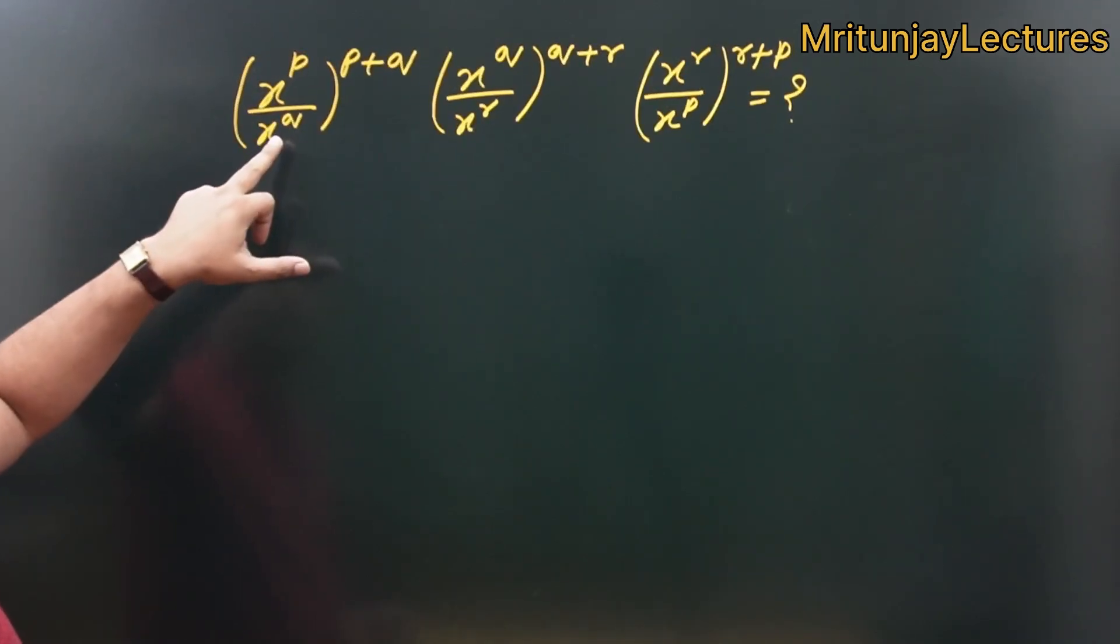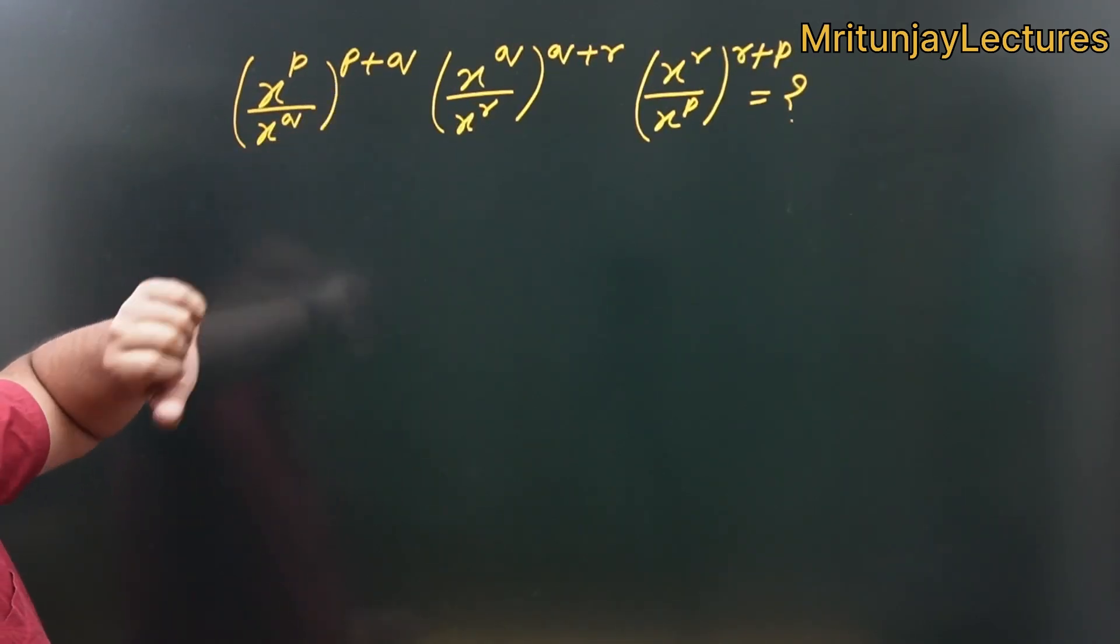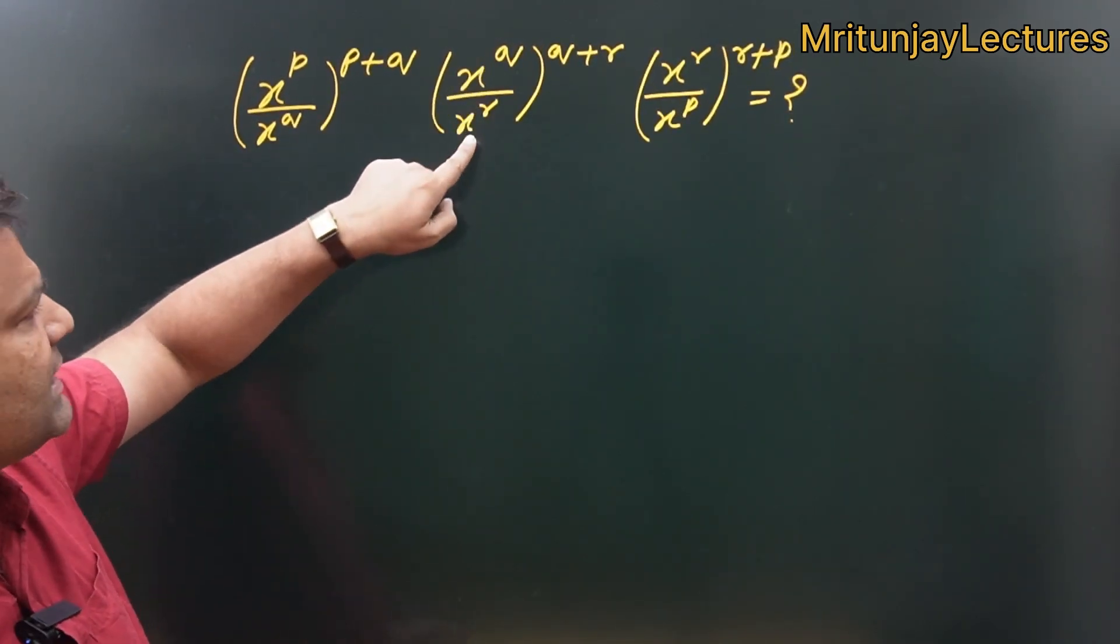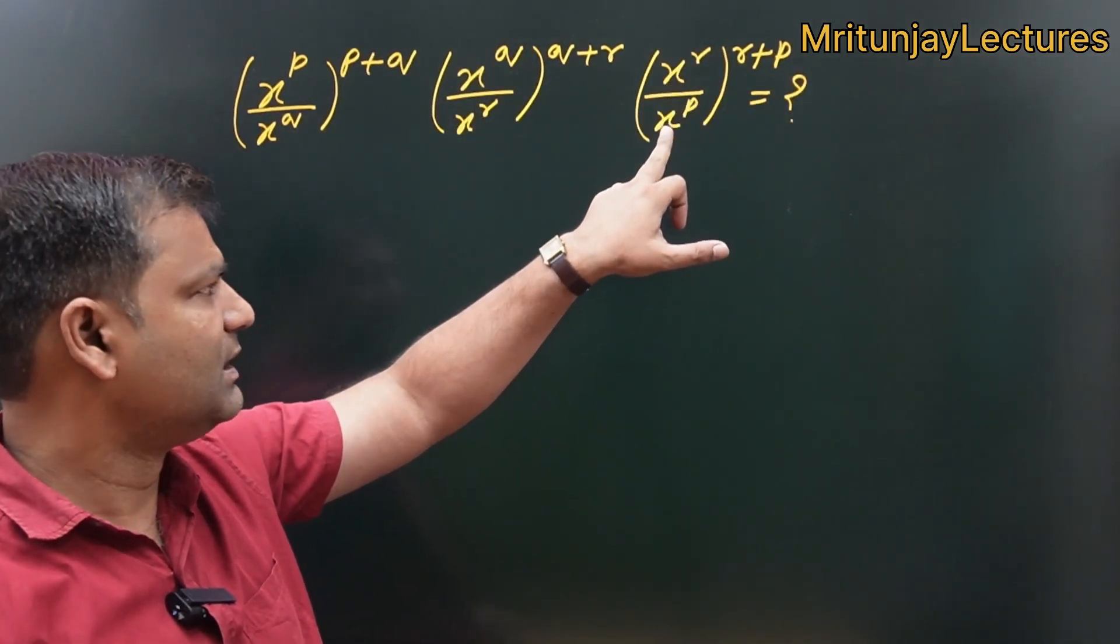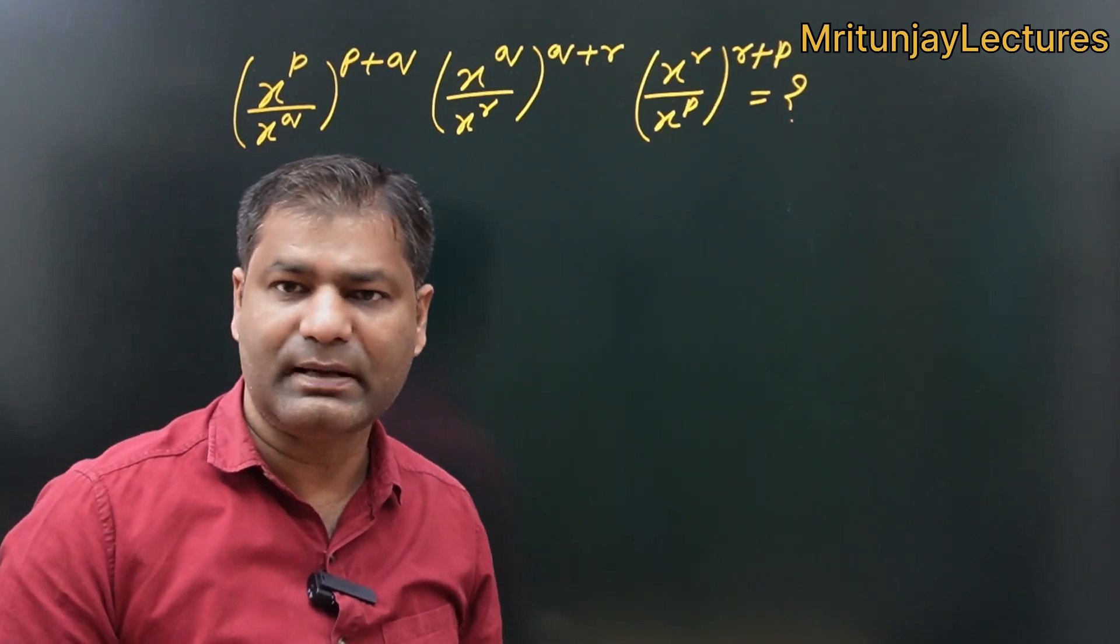x to the power p upon x to the power q to whole power p plus q. And now here x to the power q upon x to the power r to whole power q plus r. Here x to the power r upon x to the power p to whole power r plus p.